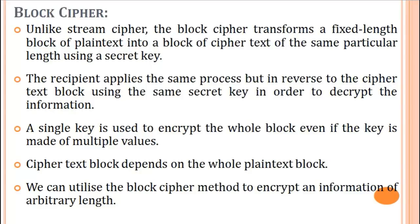Block cipher is not similar to a stream cipher. In block cipher, it works on a block of message or block of keys and similarly converts into a block of cipher text. The block cipher transfers a fixed-length block of plain text into a block of cipher text of some particular length using a secret key. The recipient applies the same process in reverse to the cipher text block using the same secret key in order to decrypt the data. A single key is used to encrypt the whole block even if the key is made of multiple values. We can utilize block cipher methods to encrypt information of arbitrary length.